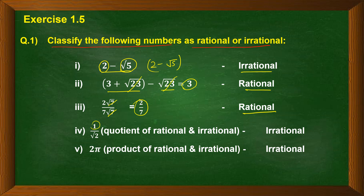Next we have 1 upon root 2. Here 1 is a rational number and root 2 is an irrational number, so we have a rational divided by an irrational, which gives an irrational number. The fifth number is 2π — 2 is rational and π is irrational, so their product is an irrational number.